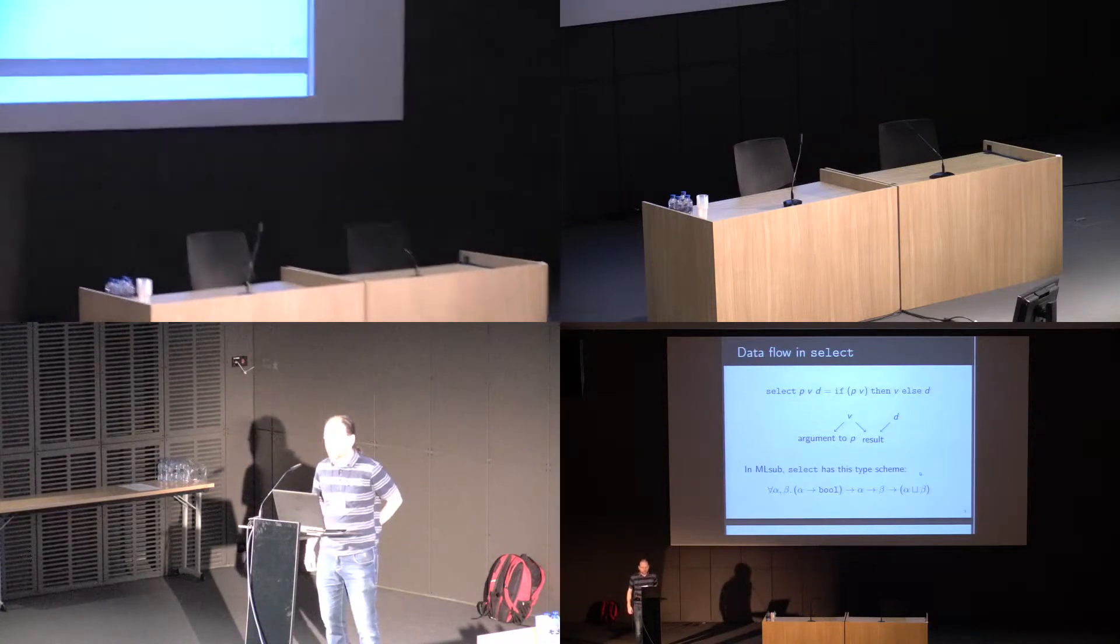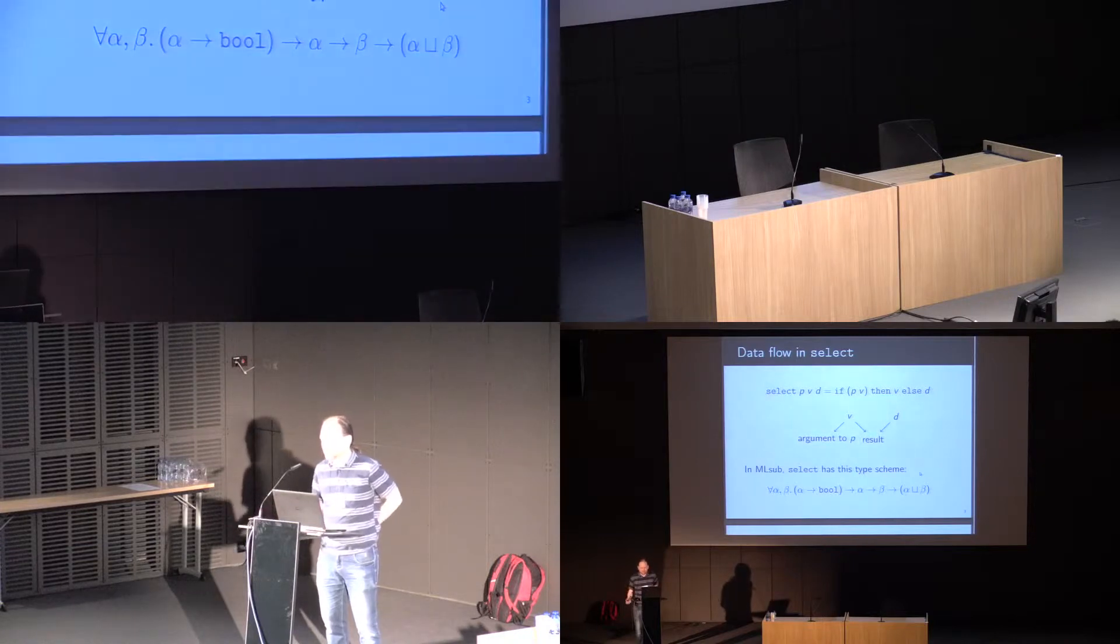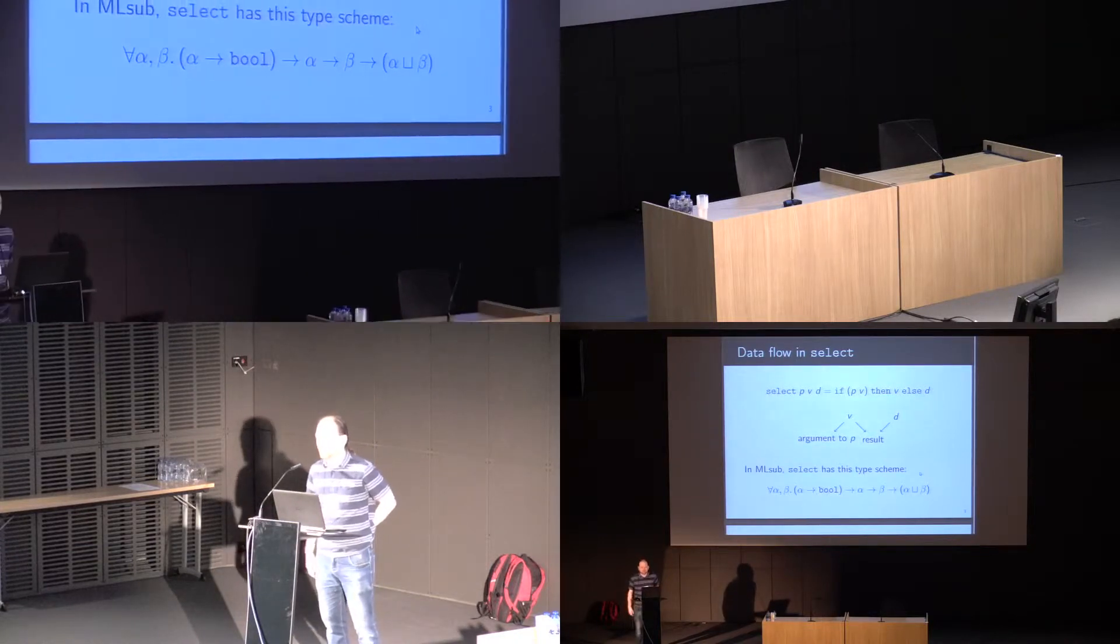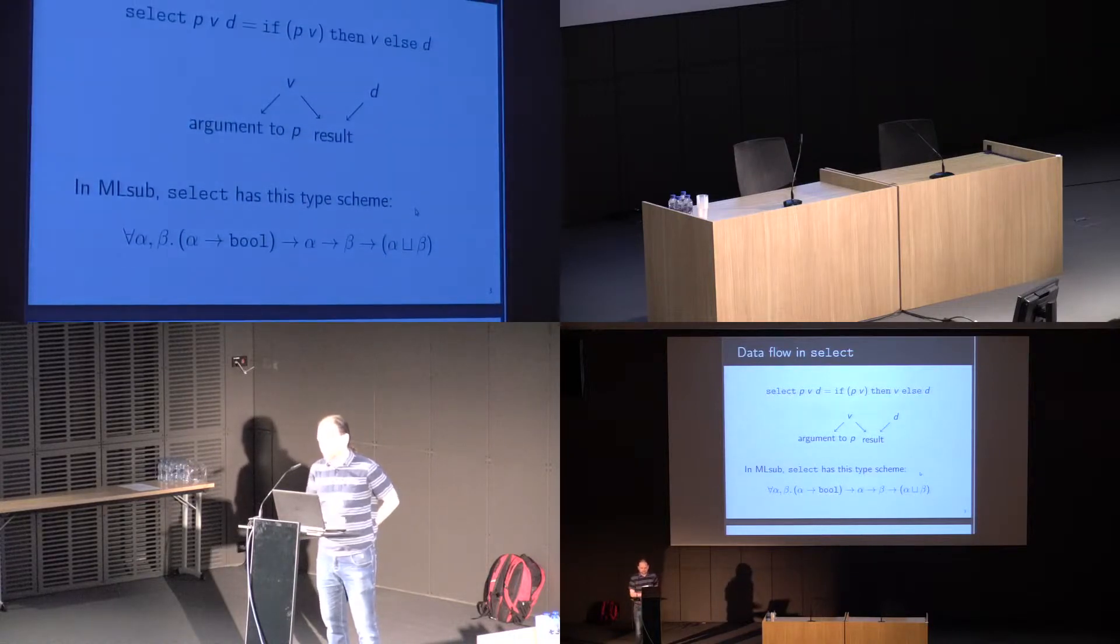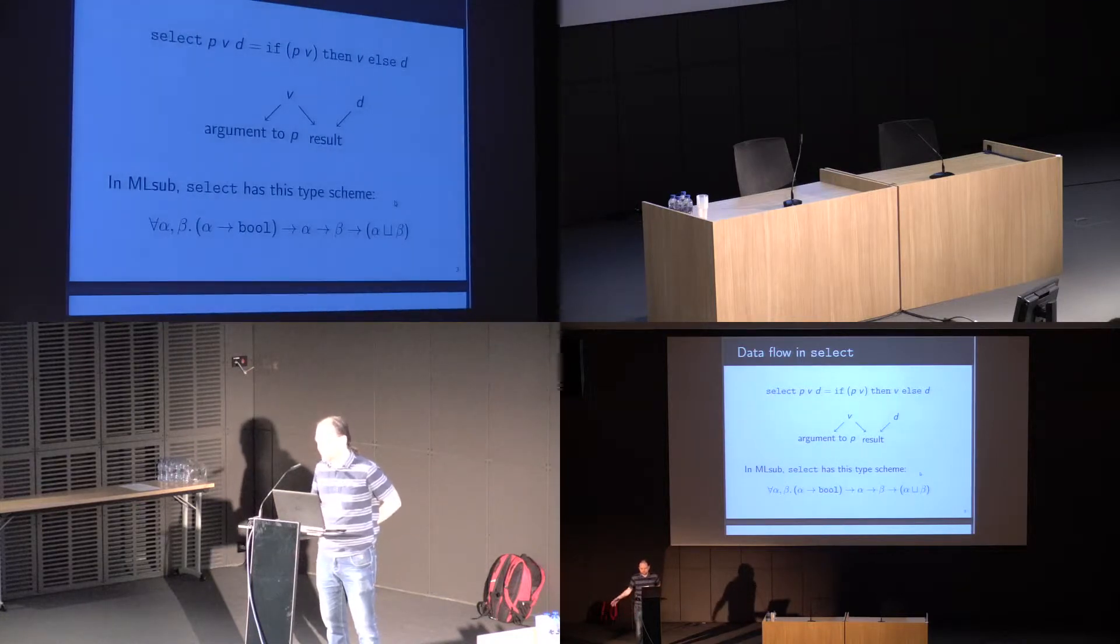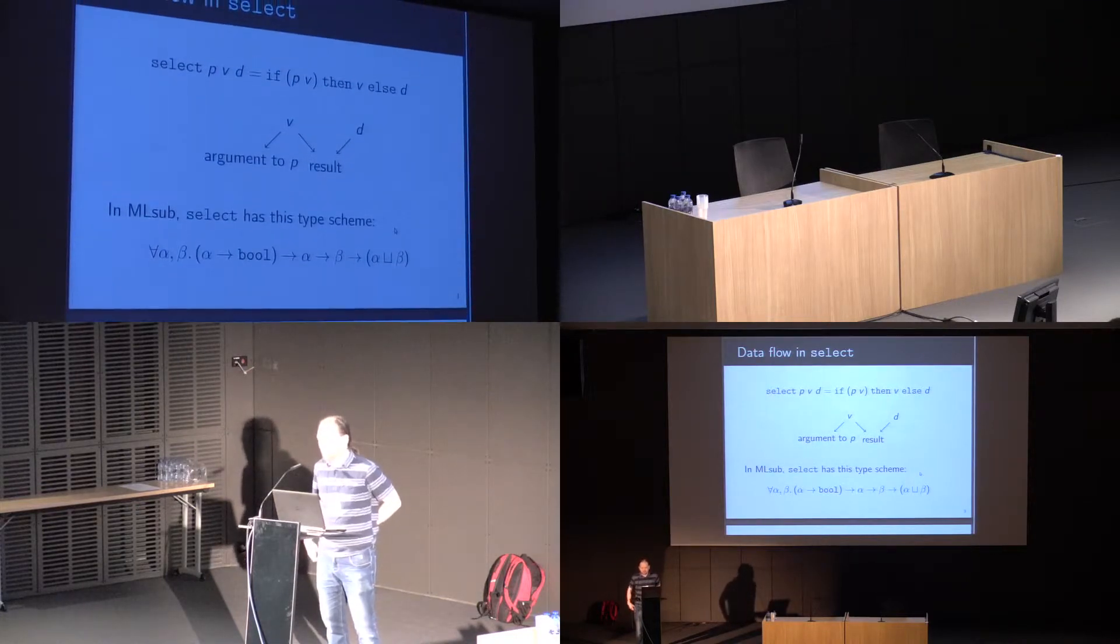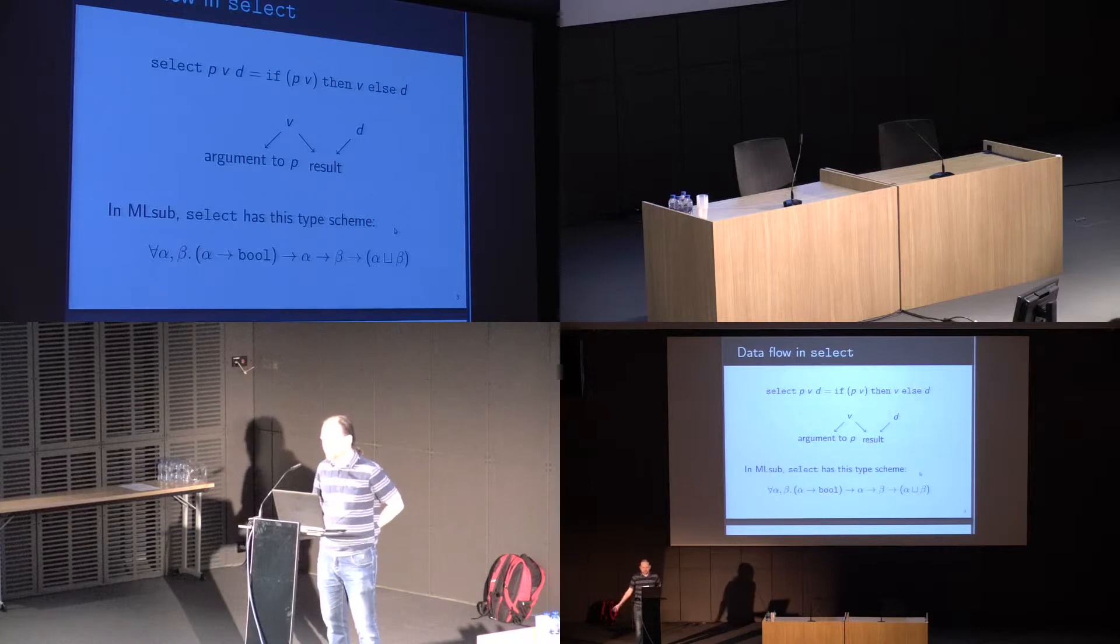This means that I can pass as the default value D a record which has fields A, B, and C, a predicate which inspects field A, and the default value which doesn't have a field A at all, and I'll know that the result has whatever fields are in common between the value and the default.